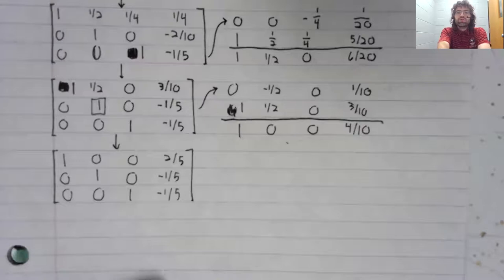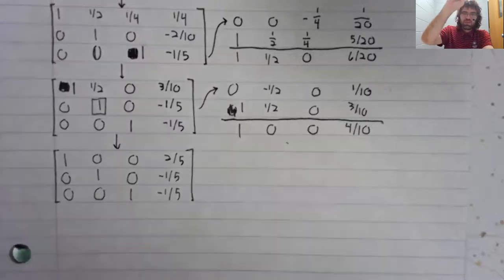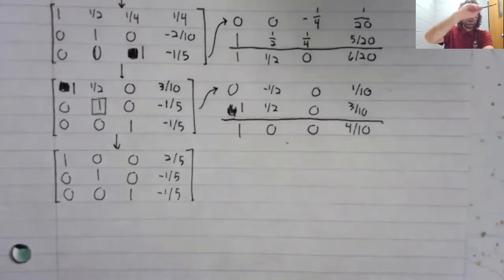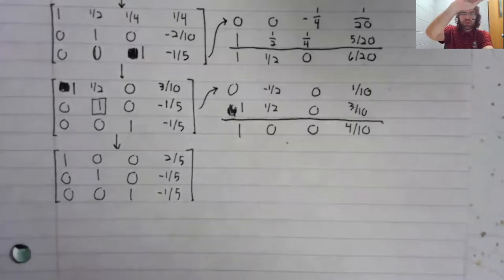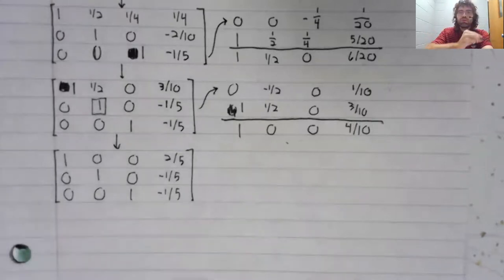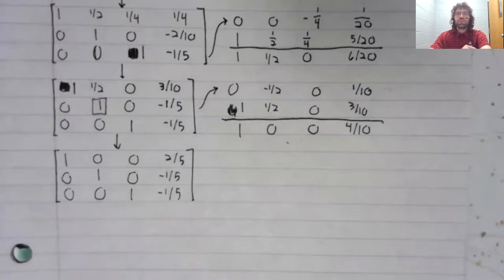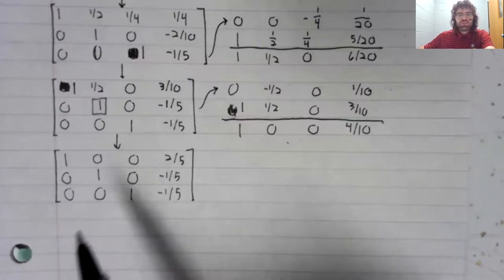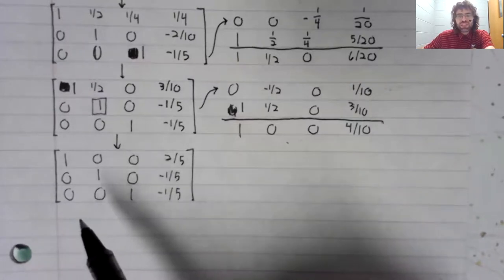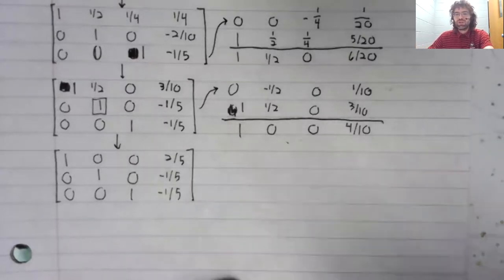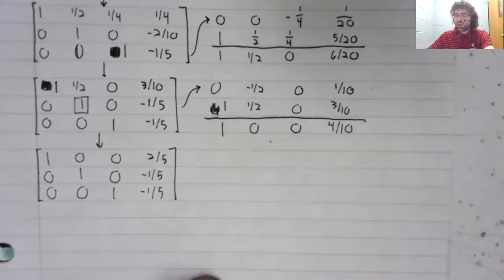If our matrix were bigger, we'd keep going. Just up and to the left, make everything above the leading entry zero. Up and to the left to the next leading entry. Make everything above that be zero. And we just keep repeating that process until the matrix was in reduced row echelon form. For this matrix, now this is in reduced row echelon form. So we're done.